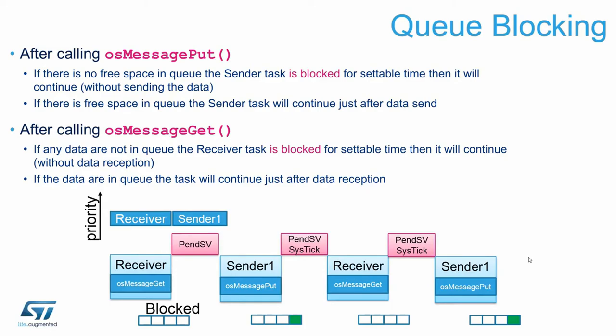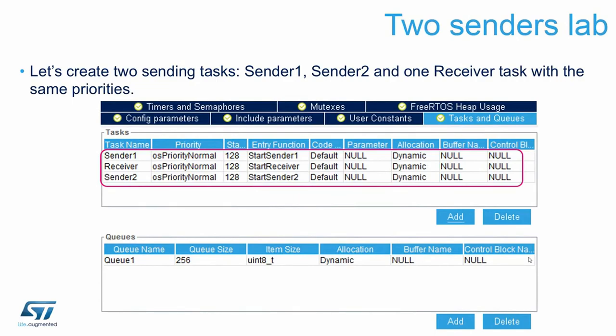If you put a zero timeout, the function does not wait at all and just returns event or failed. For the next part of the lab, come back to CubeMX, create a second sender task 'sender two' with the same priority as the other tasks. Then adapt the bodies of the two sender functions so that two different items get into the queue, and the receiver task must receive both.